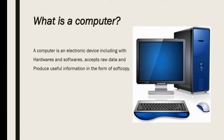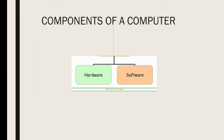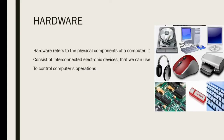The components of a computer are composed of two basic components: hardware and software. Hardware refers to the physical components of a computer. It consists of interconnected electronic devices that we can use to control the computer's operations. The physical parts of a computer are controlled and supported. Examples of hardware include keyboard, mouse, CPU, monitor, printer, speaker, hard disk, and motherboard.